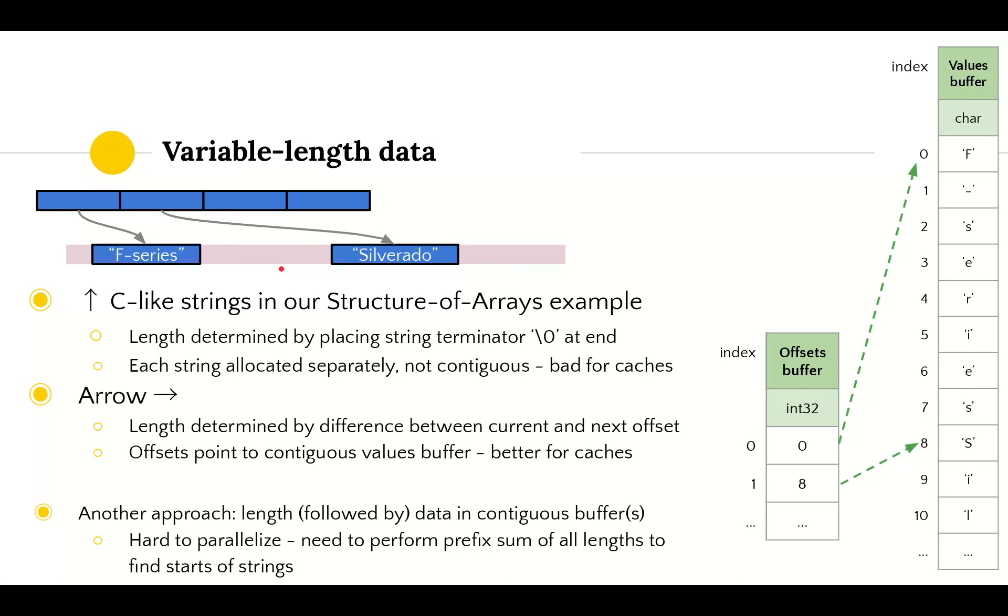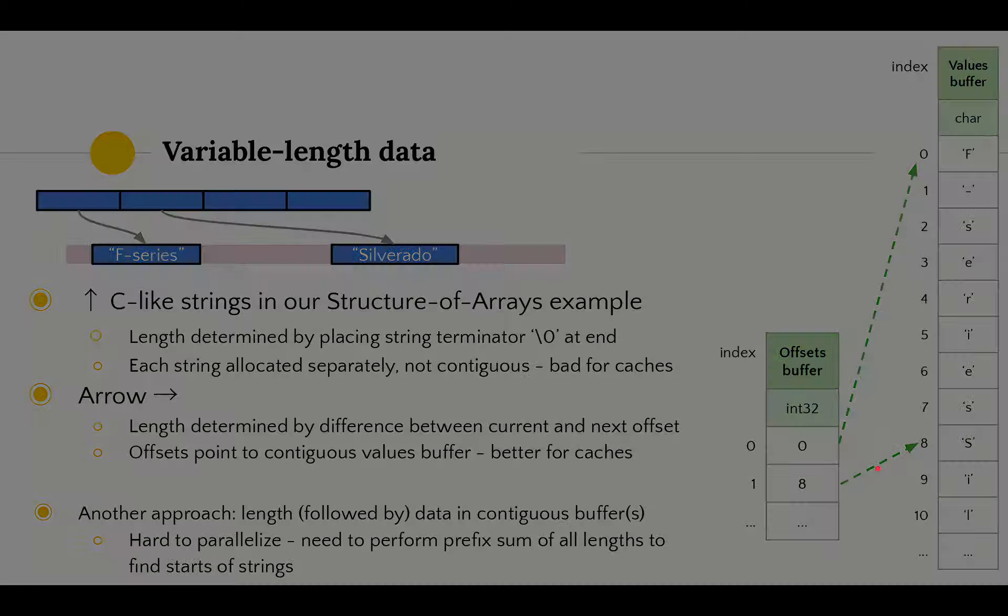In the Arrow case with offsets buffer and values buffer, it's slightly different. The offset is like a pointer, but together with the next offset, it also stores the size. We don't need a string terminator character like the null character in C, and we don't need to store length separately like is typically done for C++ or Java strings in memory. Also, our characters are stored contiguously in memory, so we get the benefits of our cache again when iterating through a column of strings. Another approach sometimes seen is that string length followed by characters or all lengths then all characters are stored in contiguous buffers, but that's hard to parallelize because to find the start of some string, you need to do a prefix sum of all the lengths.